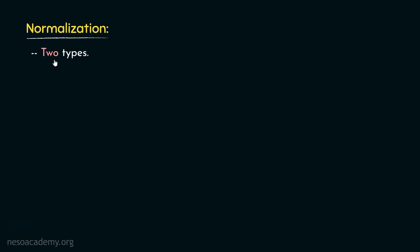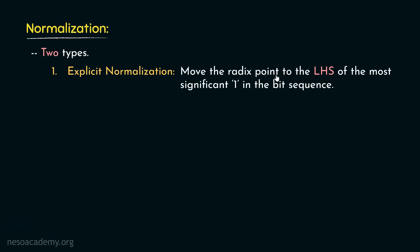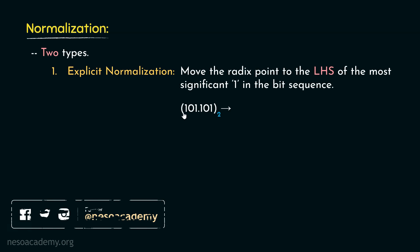Now what is normalization? There are actually two types. The first one is called explicit normalization, where we are to move the radix point to the left hand side of the most significant 1 in the bit sequence. For example, taking our number and finding the most significant 1, we move the radix point to its left hand side — so our mantissa will become like this. In order to represent the number this way, we moved the radix point 3 bit places, and so this is explicit normalization.